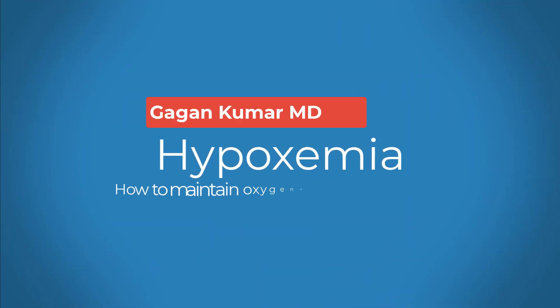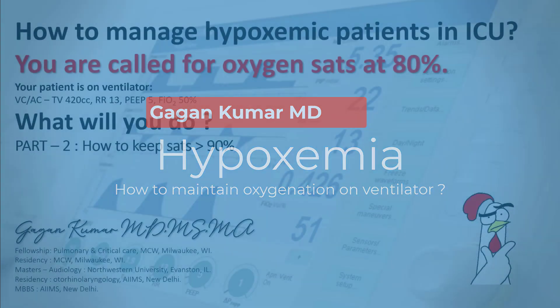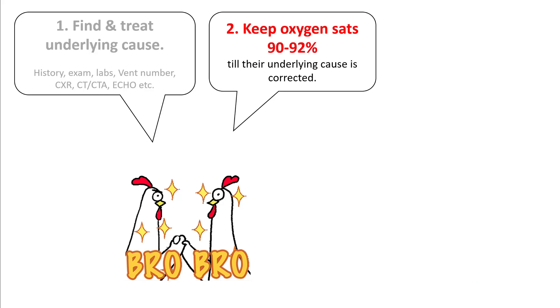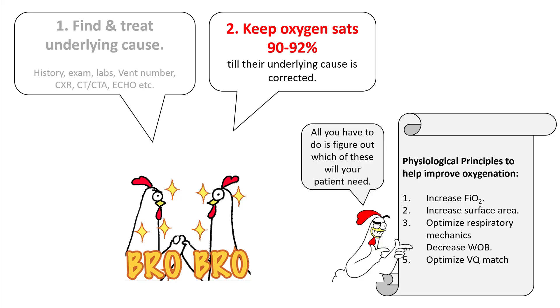Hello everyone. Today we'll be talking about how to manage a hypoxemic patient in the ICU. In this lecture we'll discuss how to keep SATs more than 90 percent. In the previous lecture we understood how to figure out the underlying cause for hypoxemia. Here we'll try to maintain oxygen SATs between 90 to 92 percent till the underlying cause is corrected.